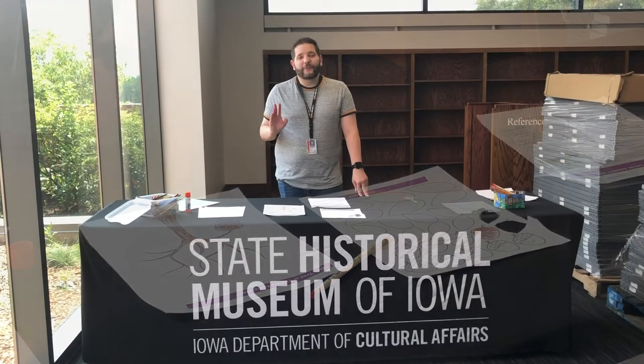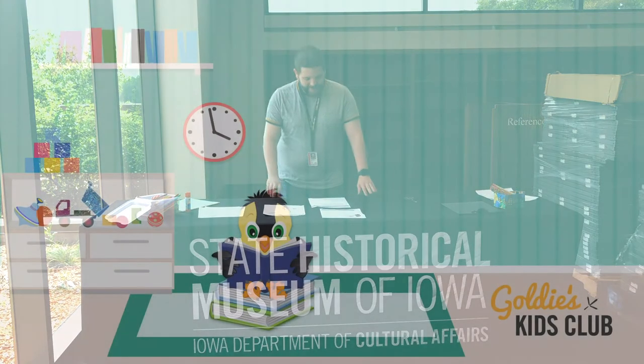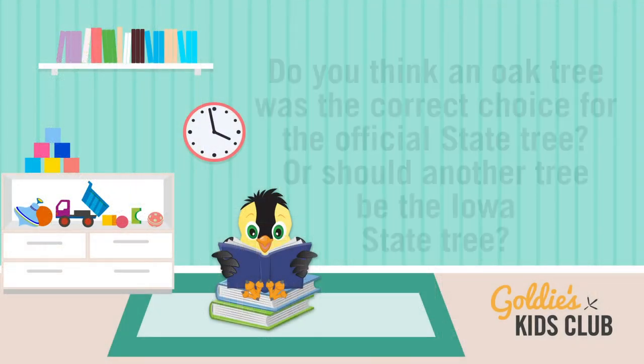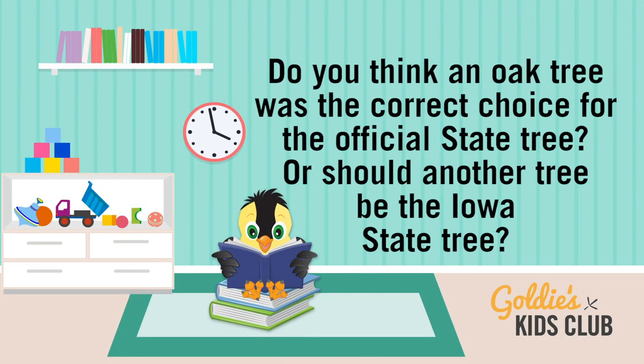Adults, while your young historian is doing this activity, ask the following questions: Iowa's official state tree is the oak — do you think the oak tree was the correct choice for the official state tree, or should another tree be Iowa's state tree? Explain your answers.